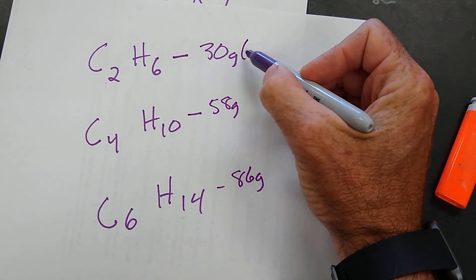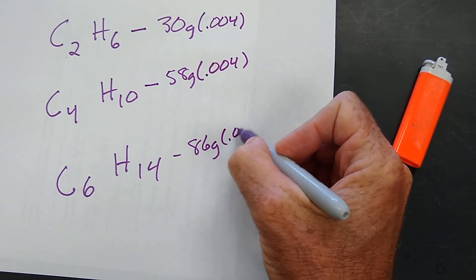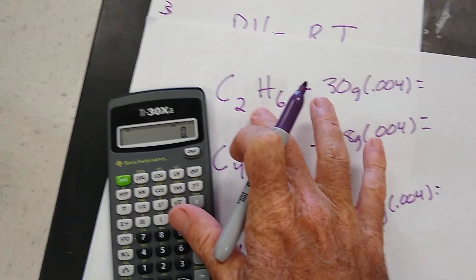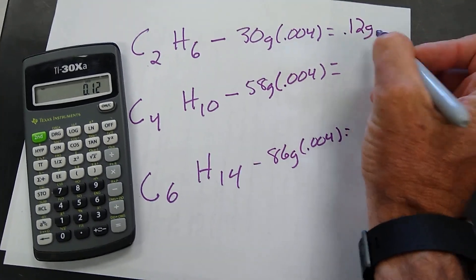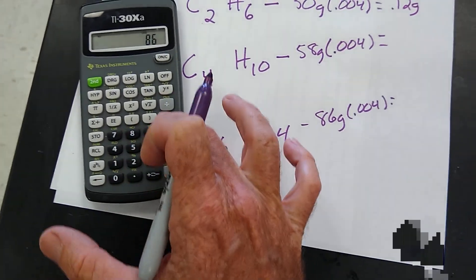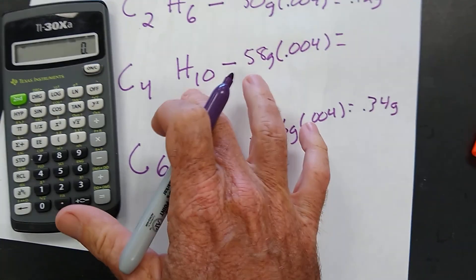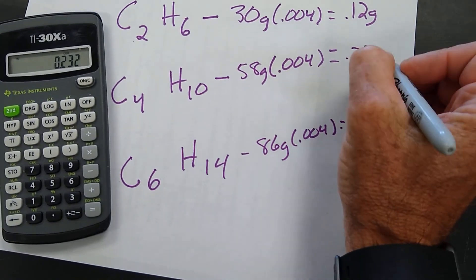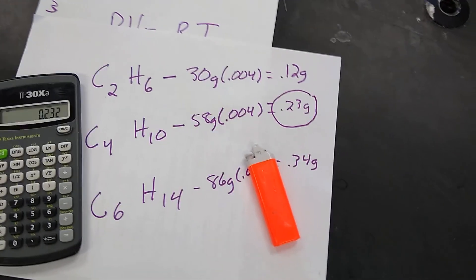So if we think about it, we know how much 0.004 moles of either one of these gases weighs. For the ethane, 30 times 0.004 equals 0.12 grams. For hexane, 86 times 0.004 weighs 0.34 grams. For the butane, 58 times 0.004 equals 0.23 grams. There we go. Butane is the gas that was in the lighter.